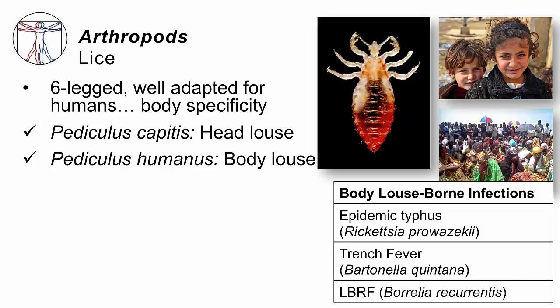The most classic infection spread by the body louse is epidemic typhus, an influenza-like illness caused by Rickettsia prowazekii. The body louse can also spread trench fever, caused by Bartonella quintana, and louse-borne relapsing fever, caused by Borrelia recurrentis — all spread by the body louse, not the head louse.